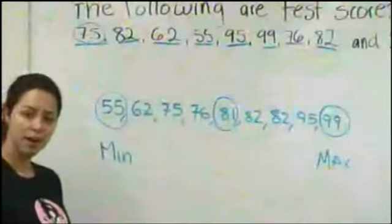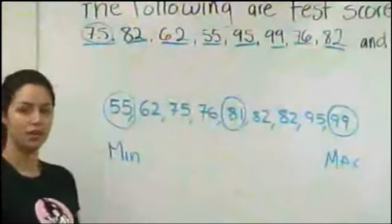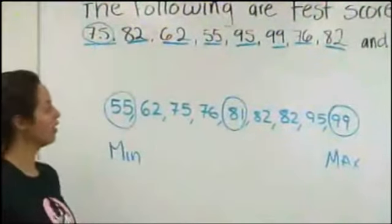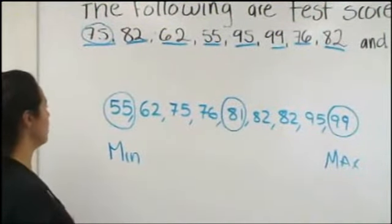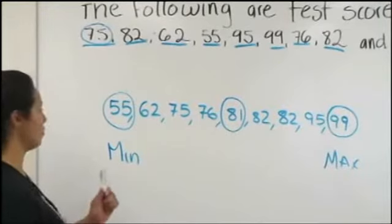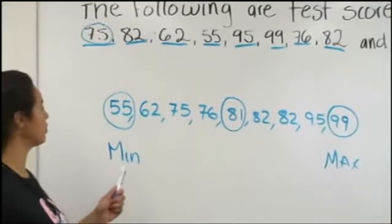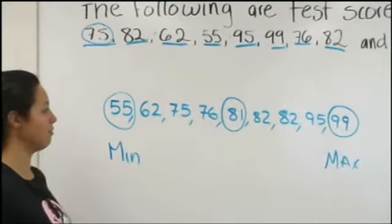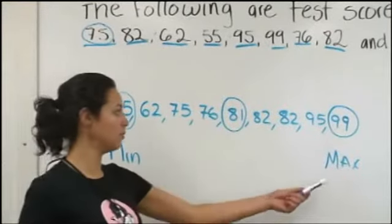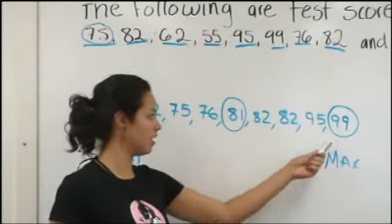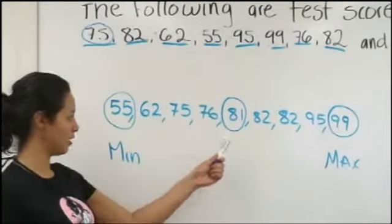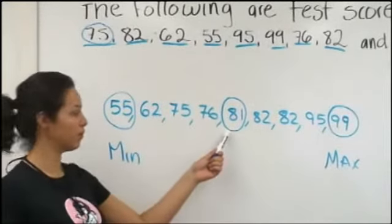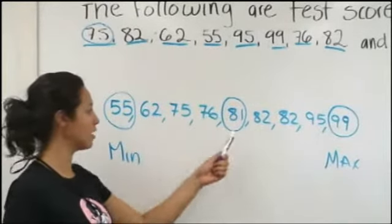To find the five number summary out of the test scores: our minimum is 55, our maximum is 99, and our median is 81.